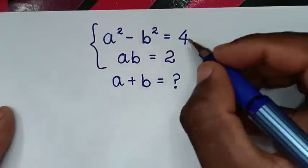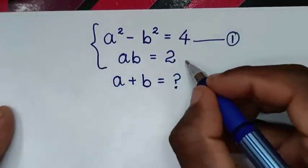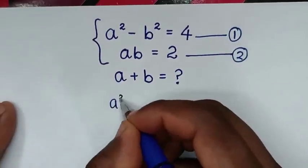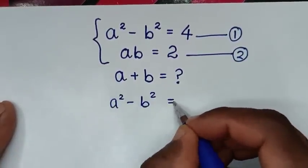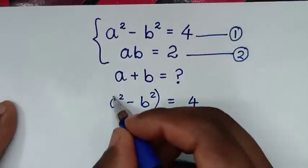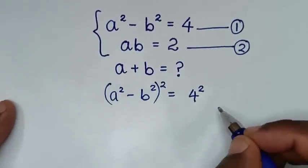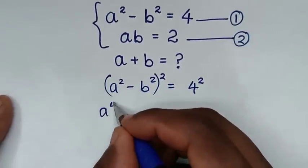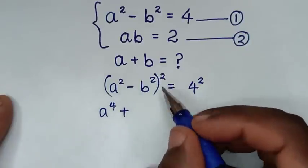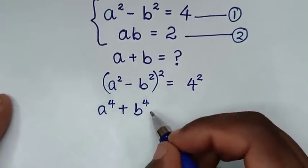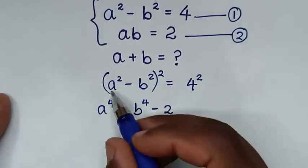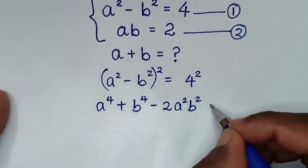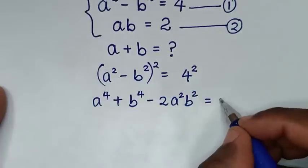In the first step, we label a² - b² = 4 as equation 1 and ab = 2 as equation 2. From equation 1, we square both sides: the square of (a² - b²) gives a⁴ plus b⁴ minus 2a²b², and the right side becomes 4 squared, which is 16.